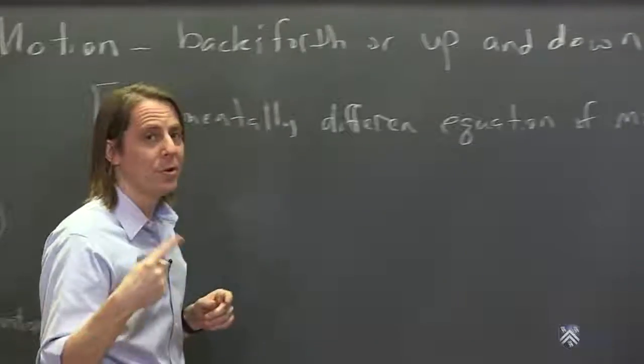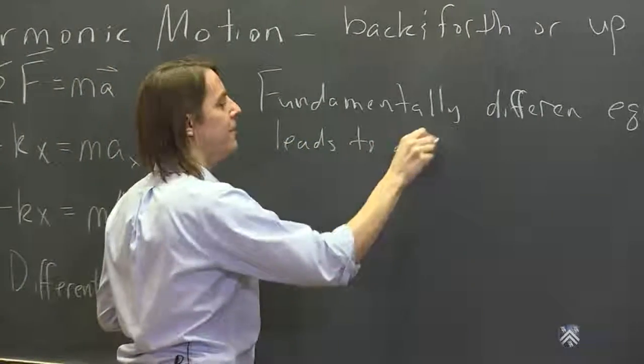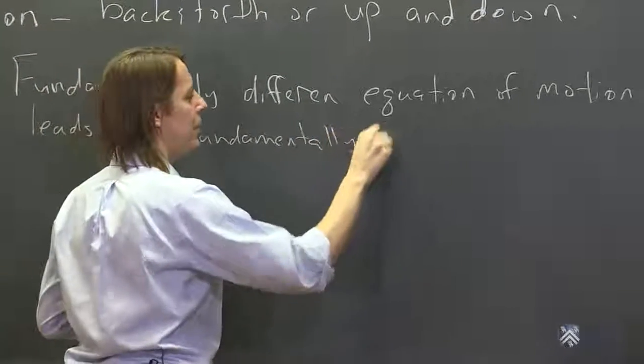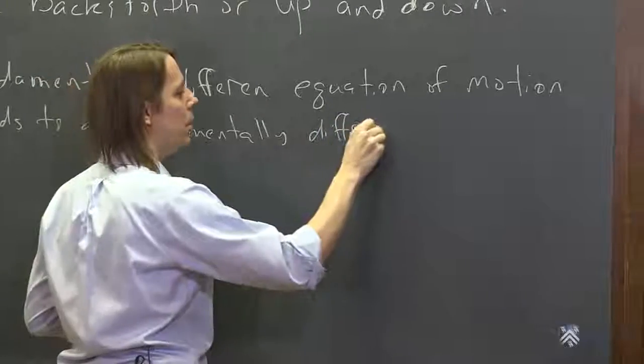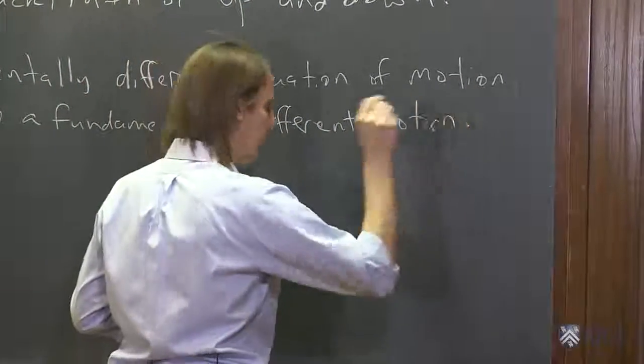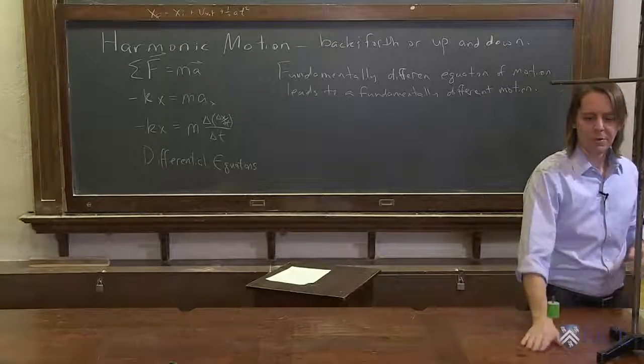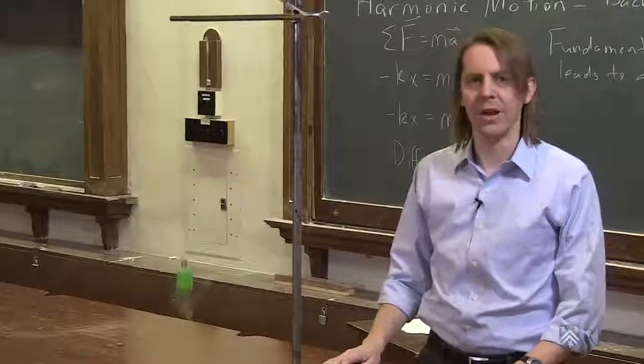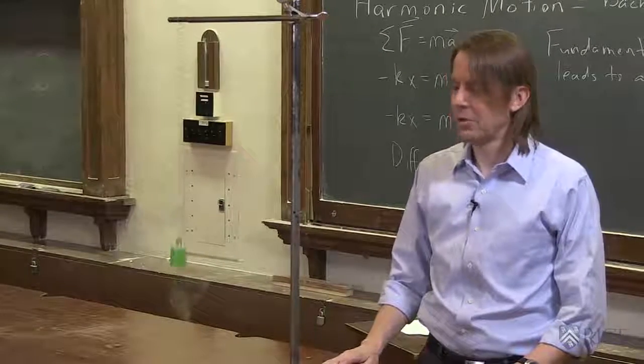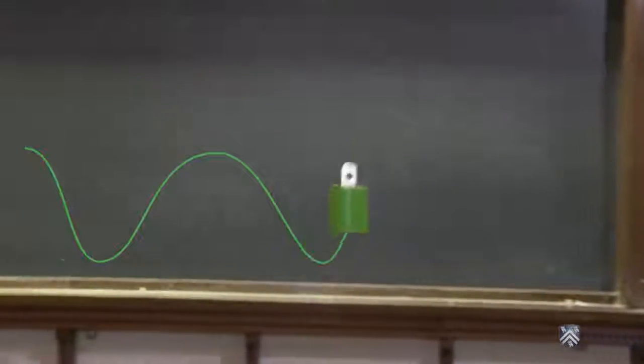If we have a fundamentally different equation of motion, we get a fundamentally different motion, as you would expect. Let's look at what the fundamentally different motion is. If I get it moving, it moves up and down like that. It's not a trajectory, it's not falling, it's something completely new. It's harmonic motion, meaning it's moving in a sinusoidal pattern.